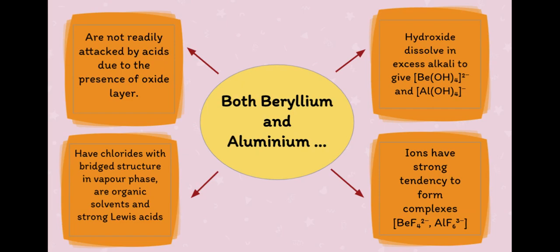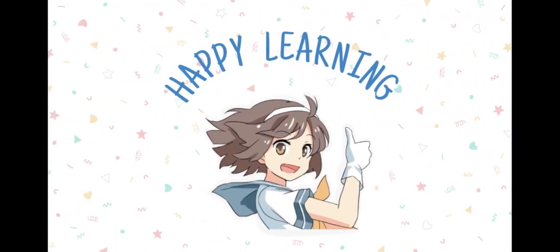Beryllium and aluminium ions have strong tendency to form complexes like BeF4^2-, AlF6^3-, etc. And that ends our topic today. Thank you for your kind attention. Happy learning!